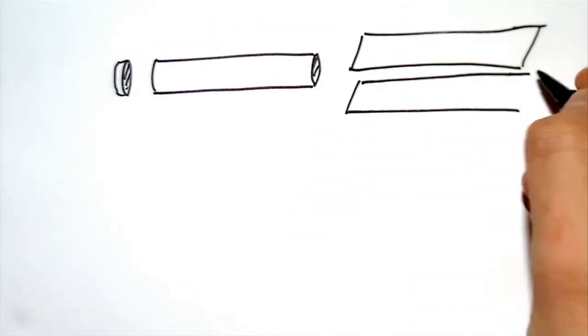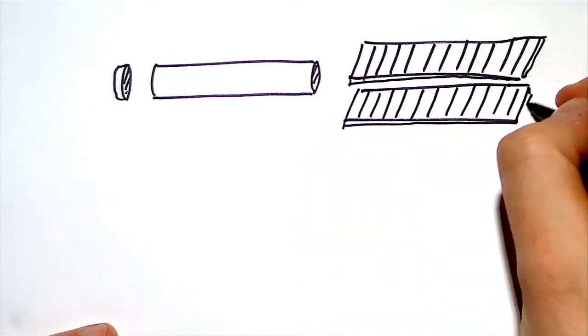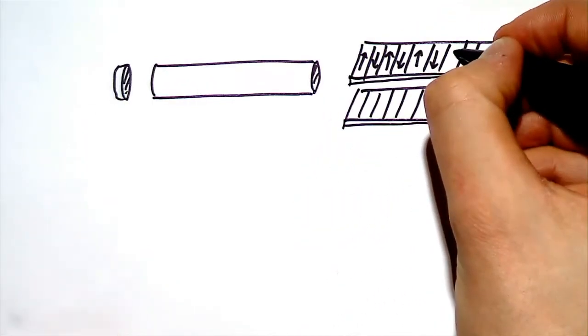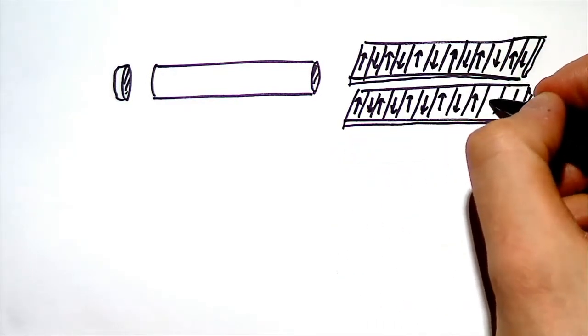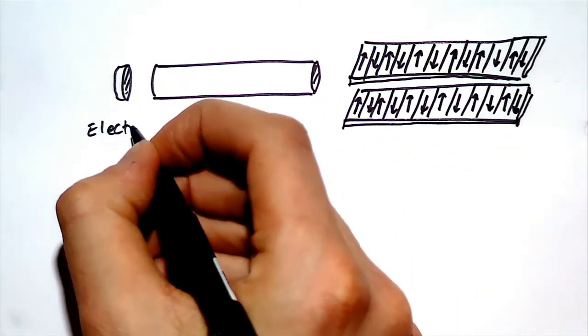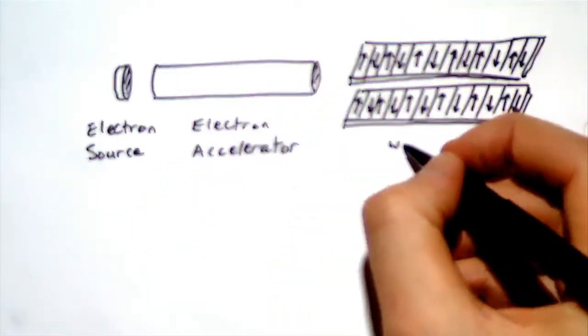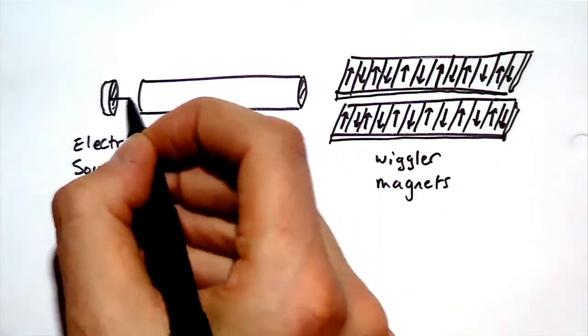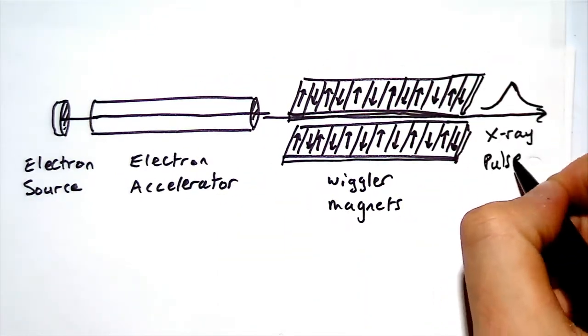This is a typical setup for a free electron laser. An electron gun is used to produce electrons. They are then passed through an electron accelerator, where a very high potential causes them to accelerate to close to the speed of light. On the right of this diagram, we have the wiggler magnets, which cause the electron to follow an oscillating path. This causes the electrons to produce radiation in the form of X-rays.